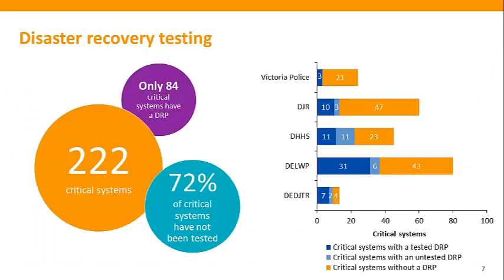None of the audited agencies have performed disaster recovery testing for all systems that support critical business functions. For agencies that do conduct testing, it is performed for selected systems and is not tested consistently. Based on analysis of data gathered from audited agencies, 222 critical systems have been identified, but only 84 critical systems have a disaster recovery plan, and only 62 have been tested. These results are shown on the graph on this slide.